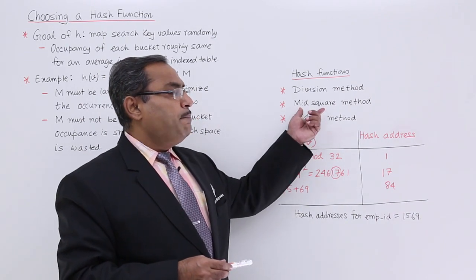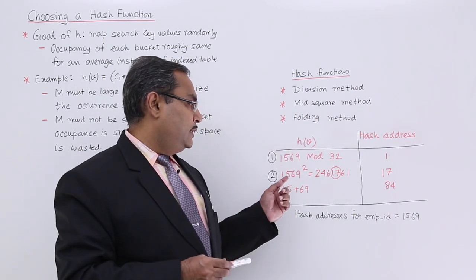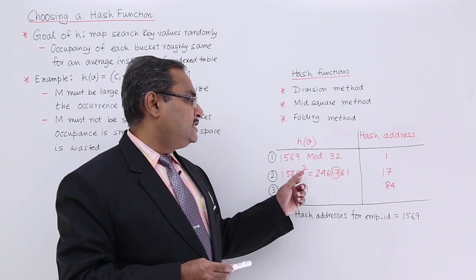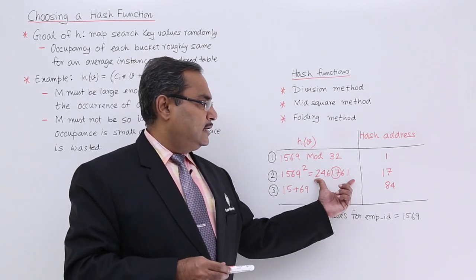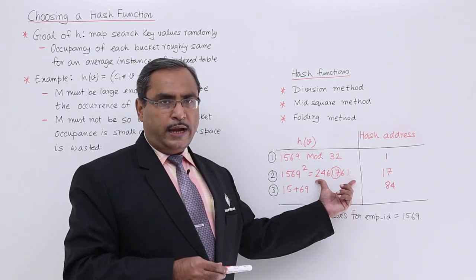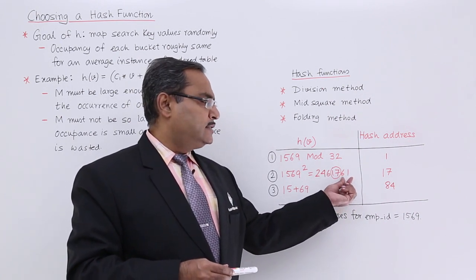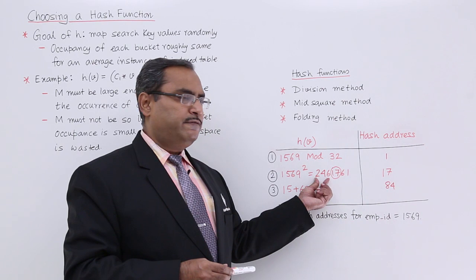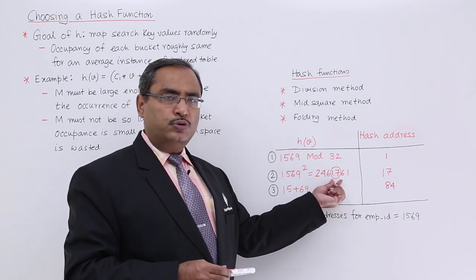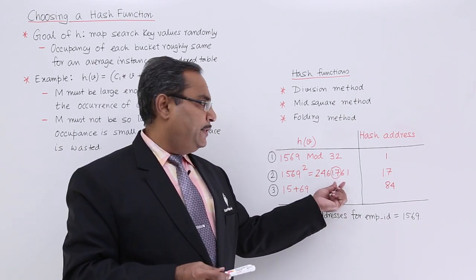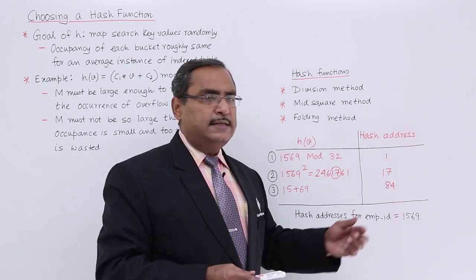There is another method that is a mid square method. Here this is 1569 square I have taken. This is the square of that employee id and you are taking the middle most two digits. Discarding the last two, discarding the first three, I am taking this middle most. So that is 17. I am taking this 17 as the hash address.